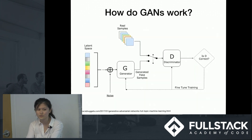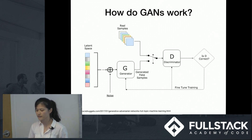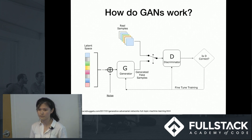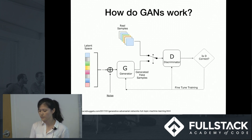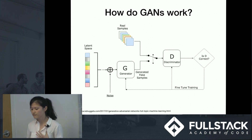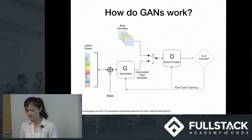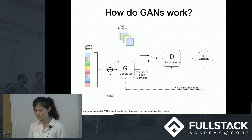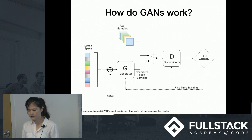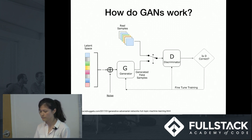Now let's return to the real theory. The main idea behind a GAN is to have two competing neural network models. One takes noise as input and generates samples — it's called the generator. The other model, called the discriminator, receives samples from both the generator and the training data, and has to identify real and fake inputs. If the discriminator makes the right prediction, the generator updates its parameters in order to generate better fake samples to fool the discriminator.